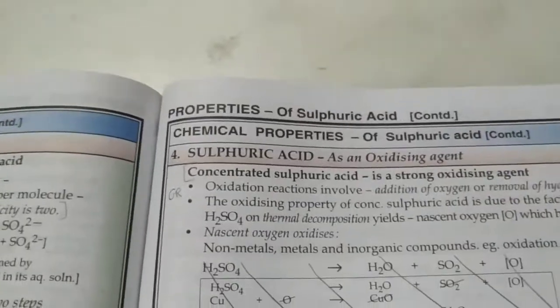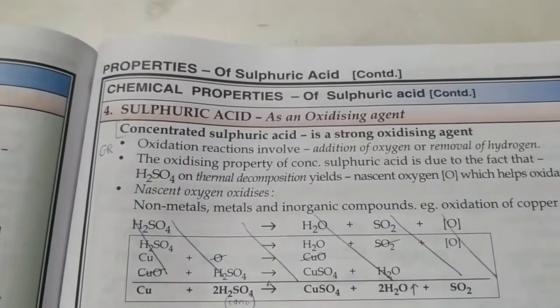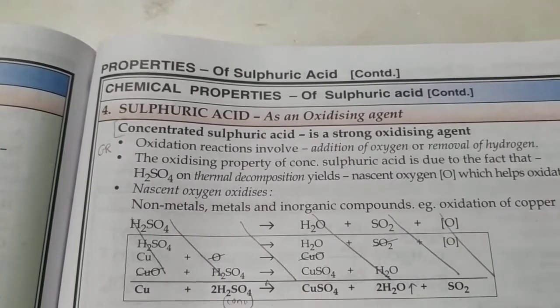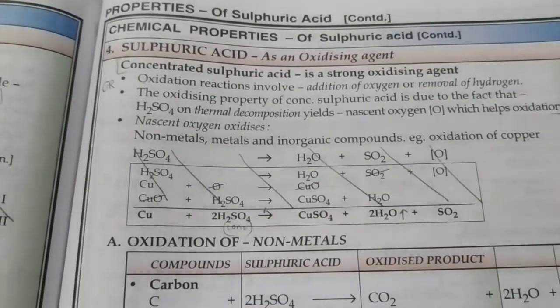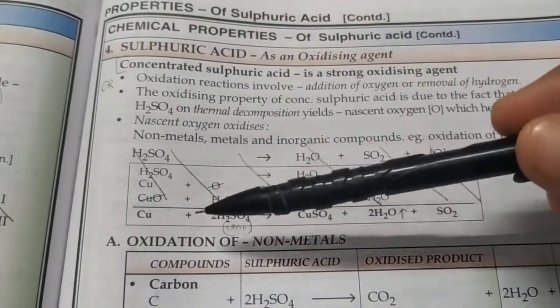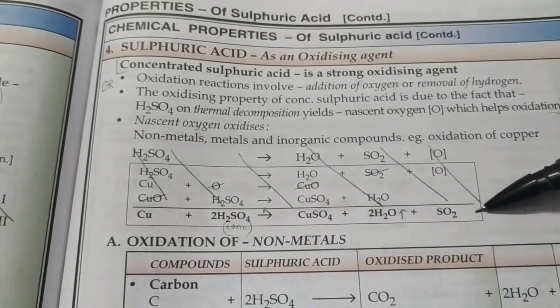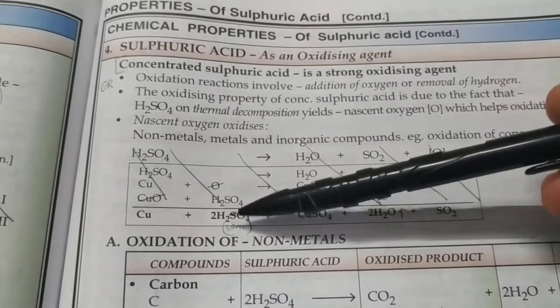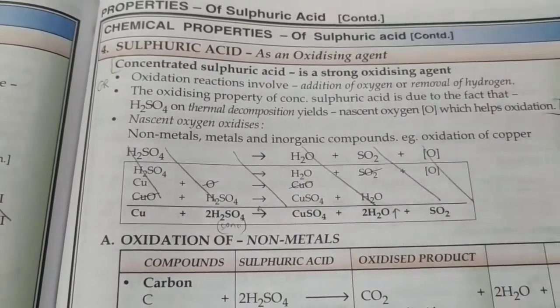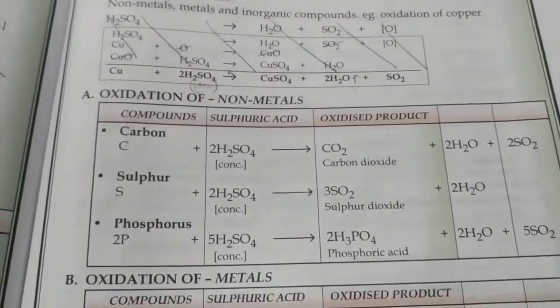Sulfuric acid when concentrated acts as an oxidizing agent. Only conc sulfuric acid acts as an oxidizing agent, that is why it can react even with inactive metals like copper, but it won't give hydrogen of course, it will give you water and sulfur dioxide. Only conc sulfuric acid can react, not dilute.